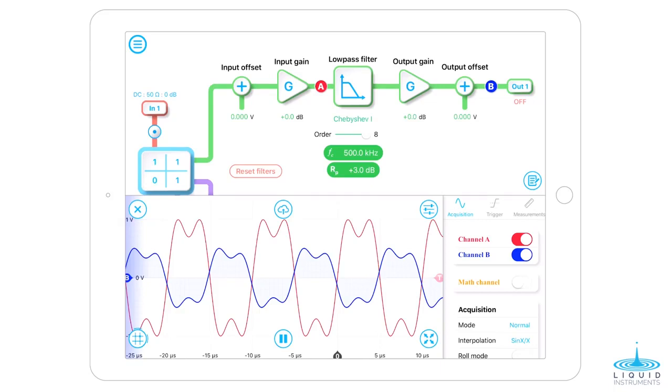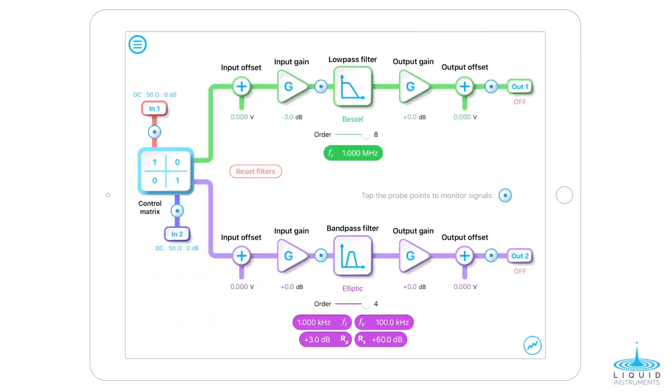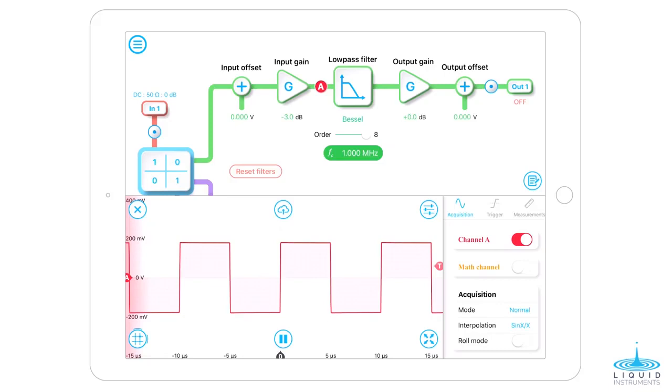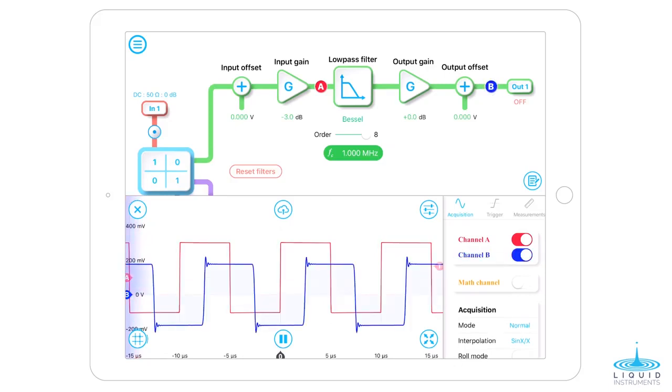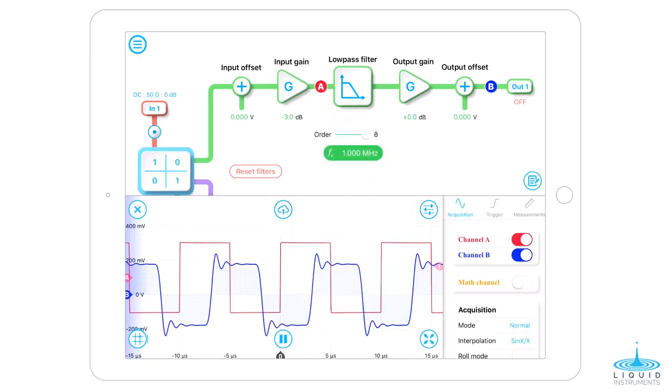The effect of non-linear phase response is even more pronounced with a square wave. Let's repeat this experiment with a 100 kHz square wave. We can clearly see that the odd harmonic components are slightly misaligned even after the Bessel filter. It's getting worse with the Butterworth filter. And the waveform is completely distorted with the Chebyshev 1 filter.